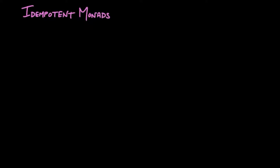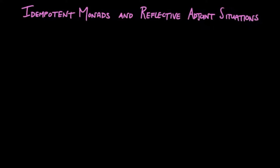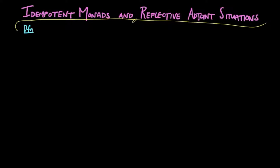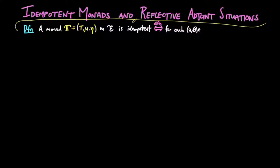In this video, we look at how a particular kind of monad, called an idempotent monad, is essentially the same as a reflective adjoint situation. A monad T on a category E is called idempotent if and only if for each object xθ in the Eilenberg-Moore category, the T-action θ is an isomorphism.